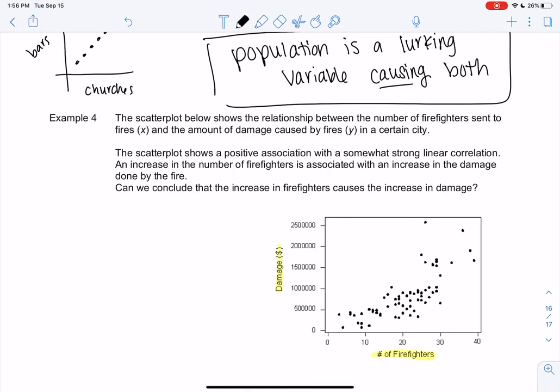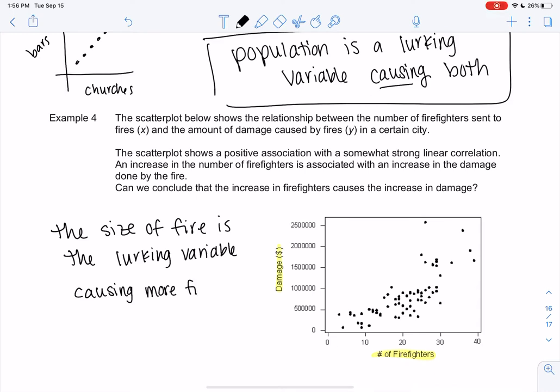So does that mean the increase in firefighters is causing the damage? No. Again, it doesn't prove cause. It just means there's a lurking variable. Why would a fire have more firefighters and cause more damage? The size of the fire. The size of the fire is the lurking variable, which is causing more firefighters and more damage. But the firefighters themselves are not causing the damage. There is a relationship between firefighters and damage, but they're not causing each other. They just happen to both happen at the same time, because we have a larger fire.